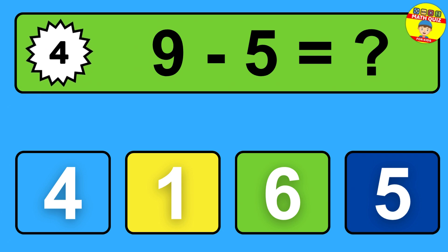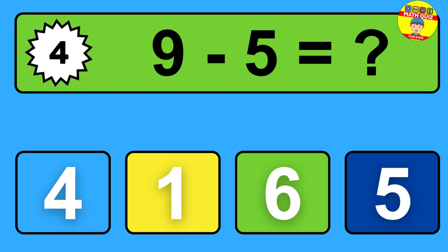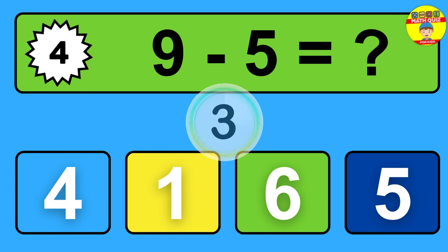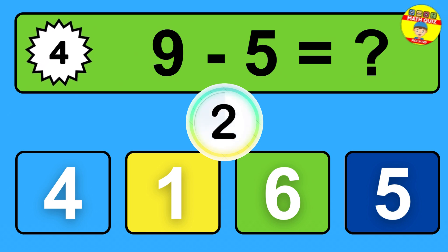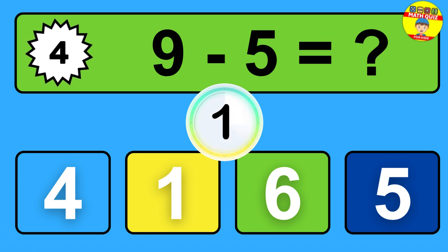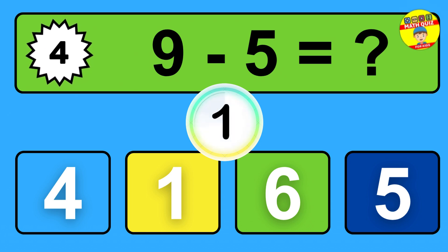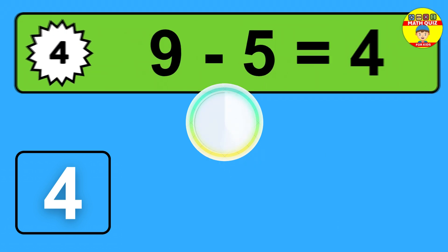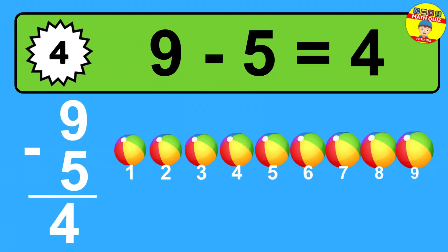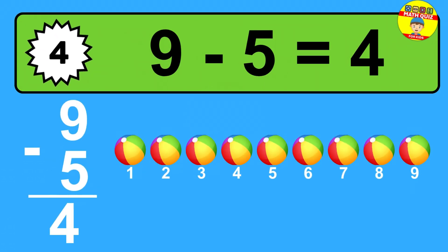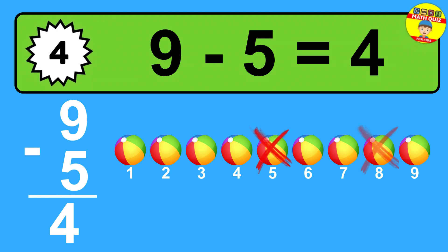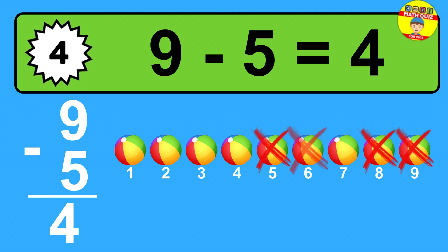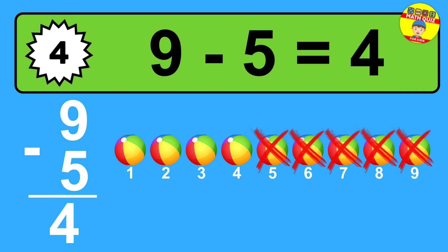Question four: nine minus five equals what? The answer is nine minus five is four. Let's count it: one, two, three, four.